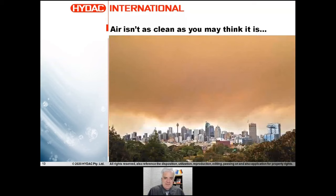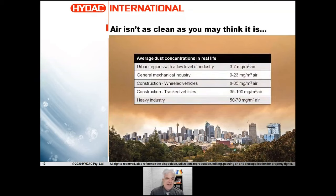Air isn't as clean as you might think. Anyone in Australia last summer during the bushfires would know how dirty air can be. Average dust concentrations in a typical suburban area might be three to seven milligrams per cubic meter of air. The dirtiest examples are in construction industries with tracked vehicles, refuse dumps, and similar environments. You need to filter your air — that's what the breathers are for.